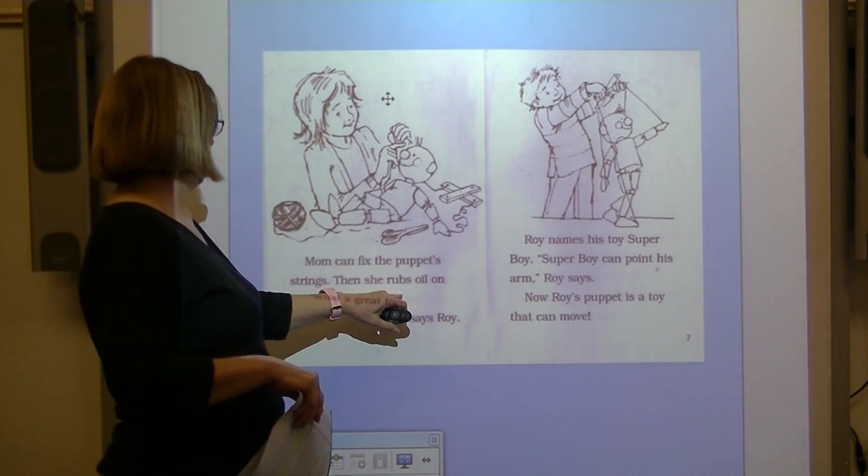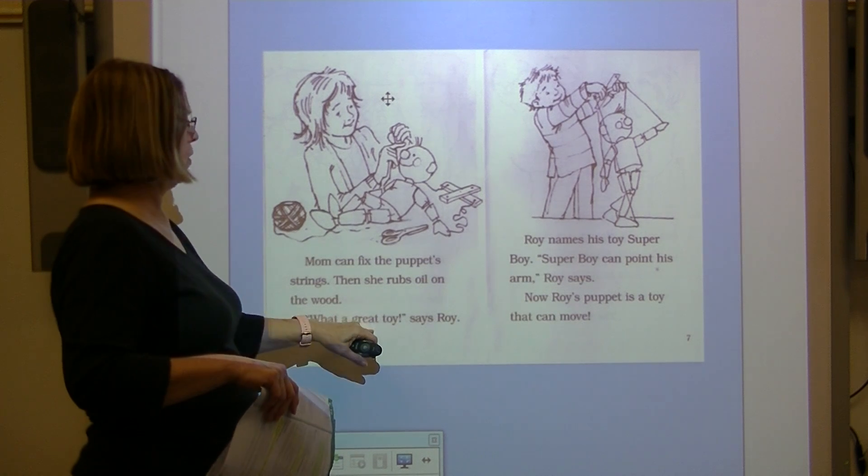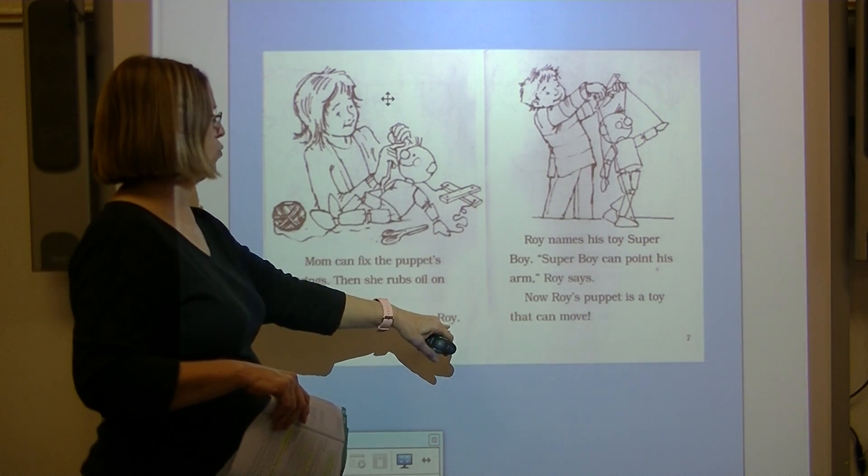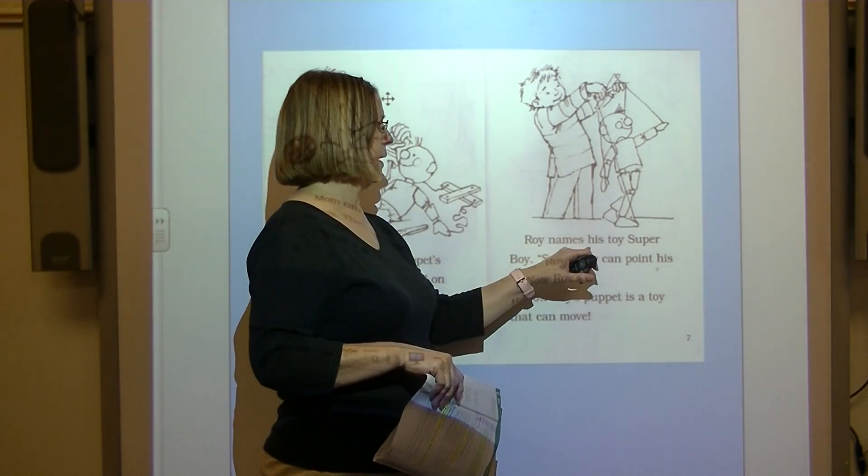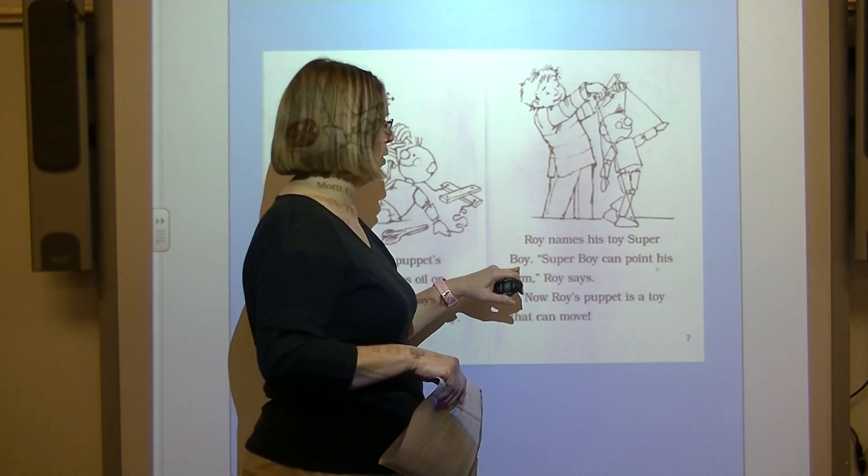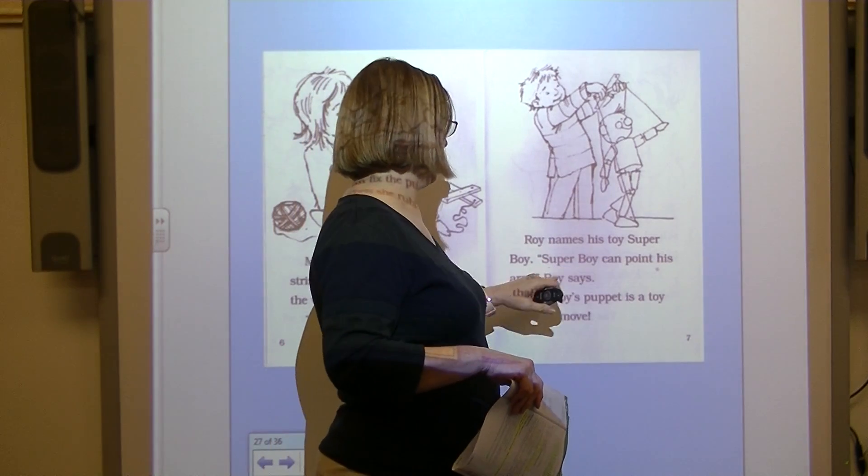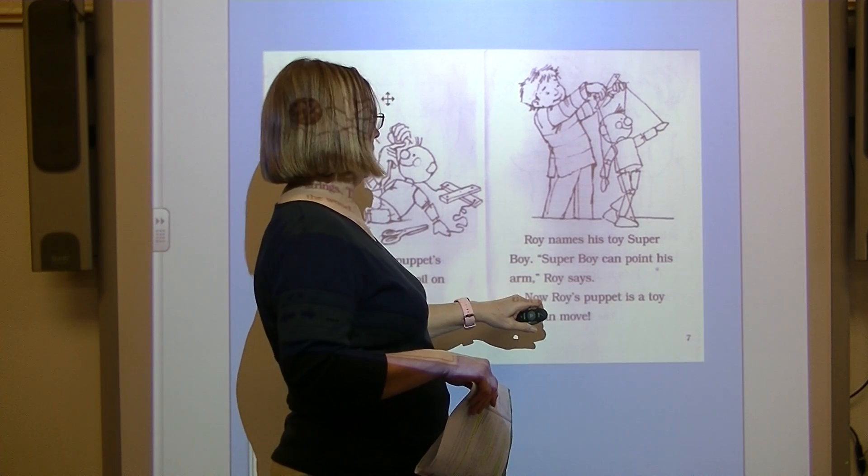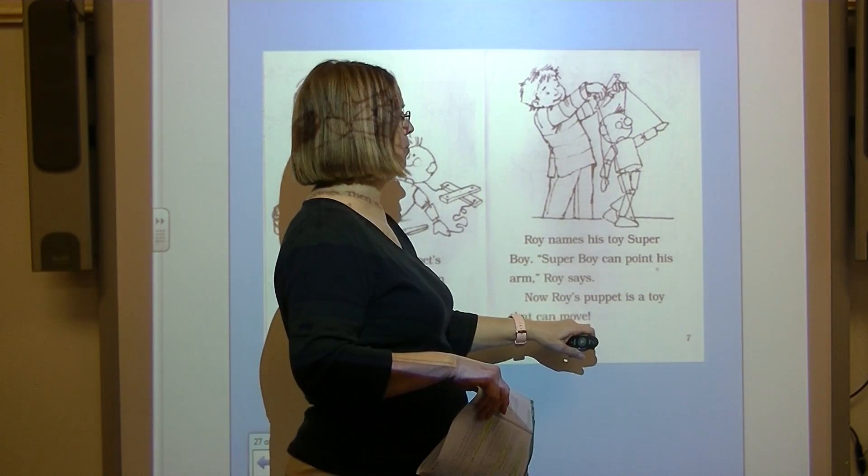Mom can fix the puppet's strings. Then she rubs oil on the wood. What a great toy, says Roy. Roy names his toy Superboy. Superboy can point his arm, Roy says.